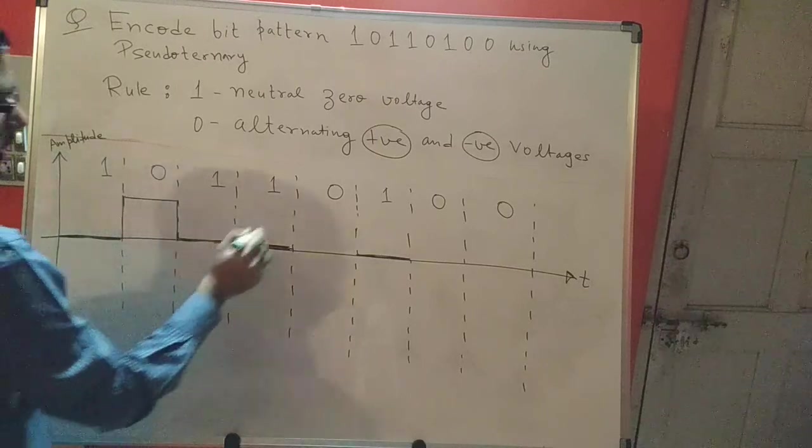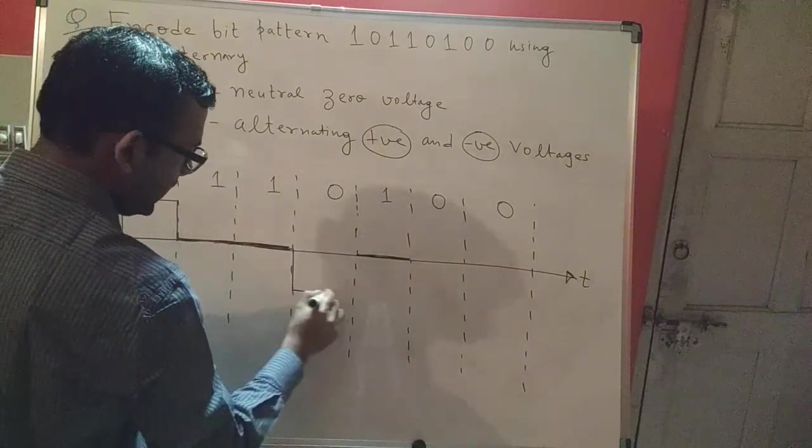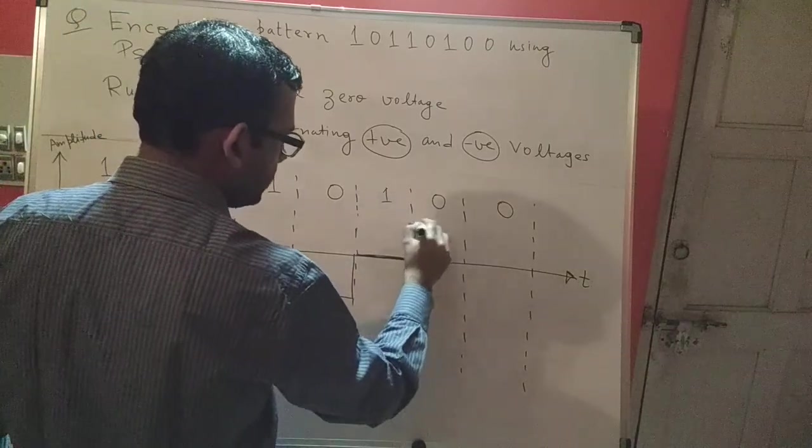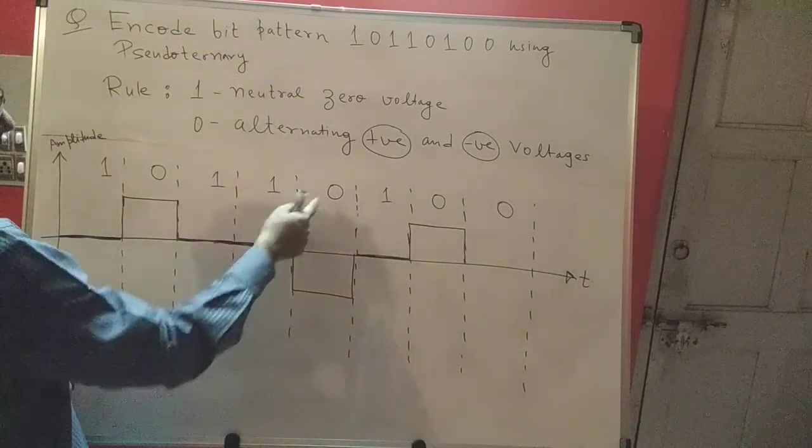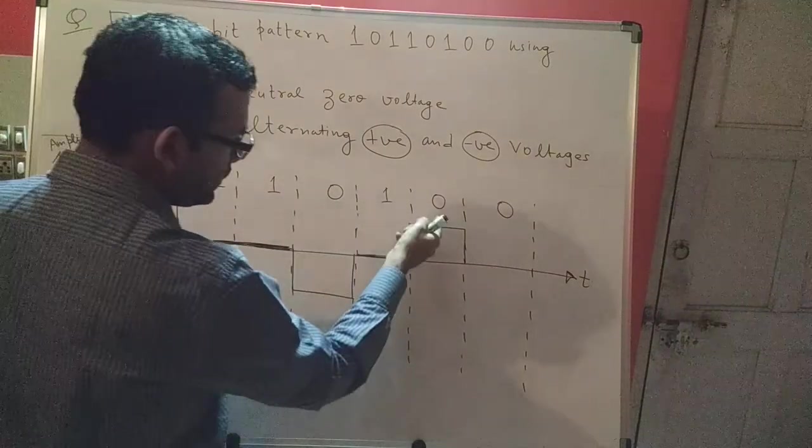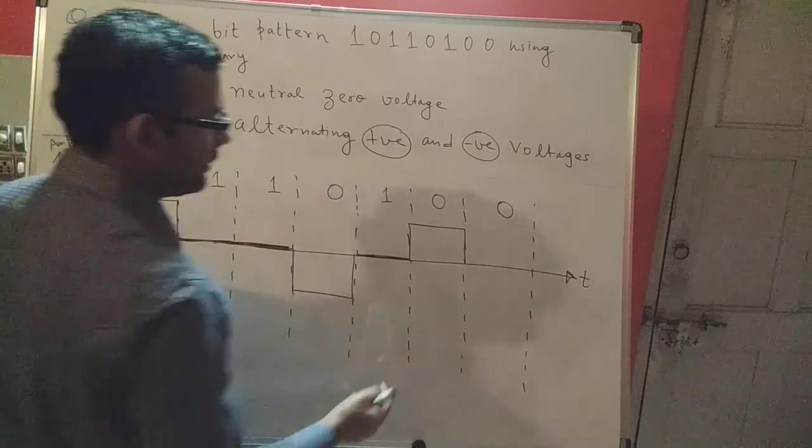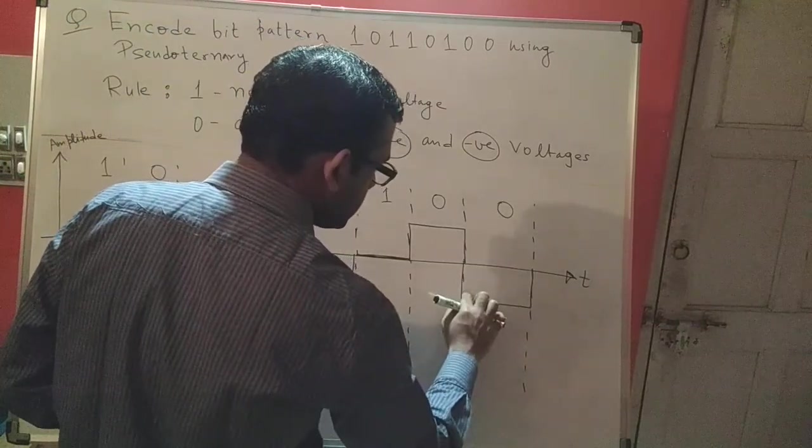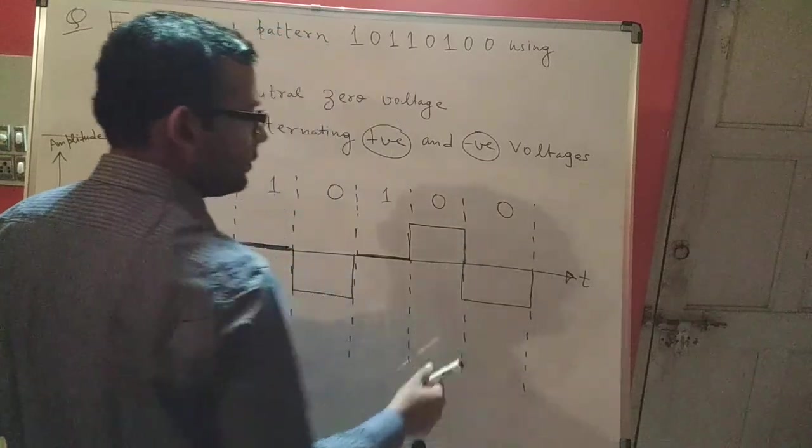The next 0 will be a negative voltage, and the 0 after that will again be positive. So it all depends on the previous one. See, this 0 is negative because the previous one was positive. This 0 is positive because the previous one was negative. And this 0 will be negative because the previous one was positive.